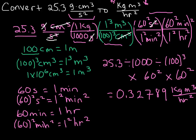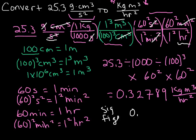Let's go back and make sure we've converted all of our units correctly. We have kilograms here, meters cubed here, and we've canceled out our minutes — those are gone — so we end up with hours squared on the bottom. The last thing we need to do is check our sig figs. Our starting quantity 25.3 has three significant figures, so our final answer is 0.328 kilograms meters cubed over hours squared.